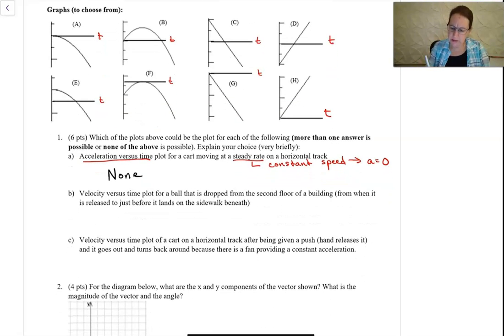Part B is velocity versus time for a ball that's dropped until it lands on the sidewalk. So it's dropped, that means it starts from rest, and then it speeds up. Typically, it's getting a more negative value, but because it's falling due to gravity, that's a constant acceleration.